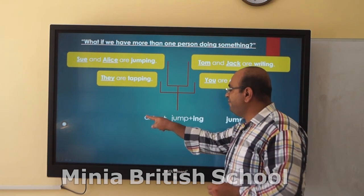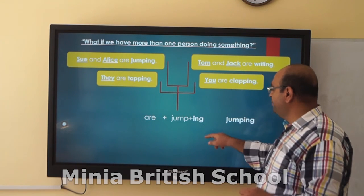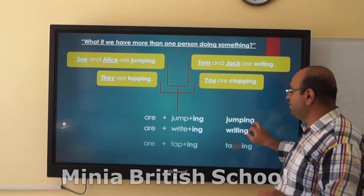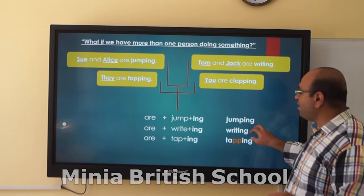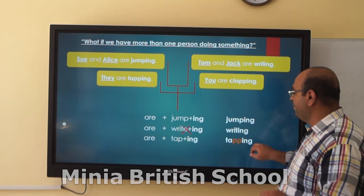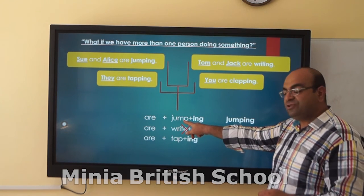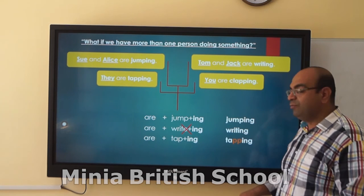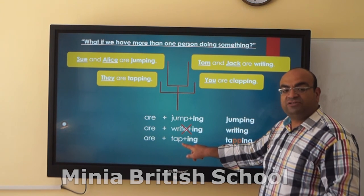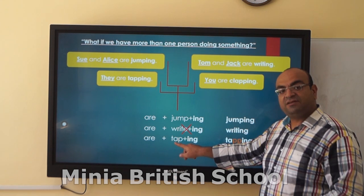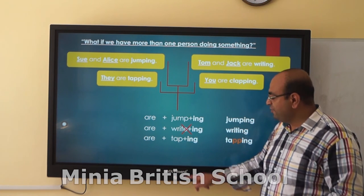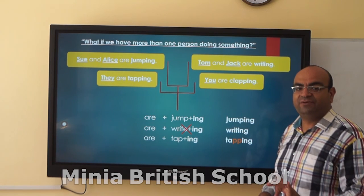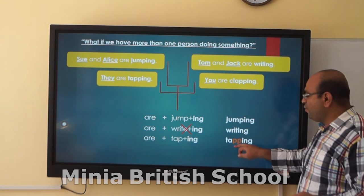Now, we have 'are' — jumping (jump + ING), writing (write + ING), tapping (tap + ING). In the first case, just add -ING. The second, remove the E. Here we have a consonant before the last letter of the verb. The last letter is a consonant and before it is a vowel — and it must be a short verb. So we double the consonant.